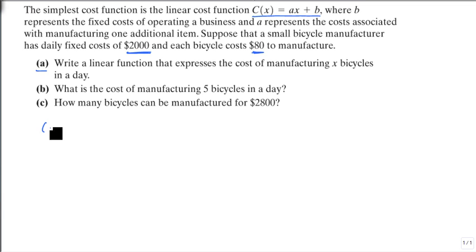That's what question a is. To answer a, we take our C(x) and set it equal to our a, which is our per item cost of $80, times x, plus our daily cost of $2,000. That's our fixed cost. Here is our cost function.